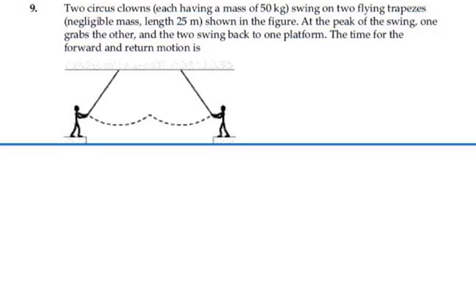Here's problem 15.9. Two circus clowns, each having a mass of 50 kilograms, swing on two flying trapezes of negligible mass, length of 25 meters, shown in the figure. At the peak of the swing, one grabs the other and the two swing back to one platform.